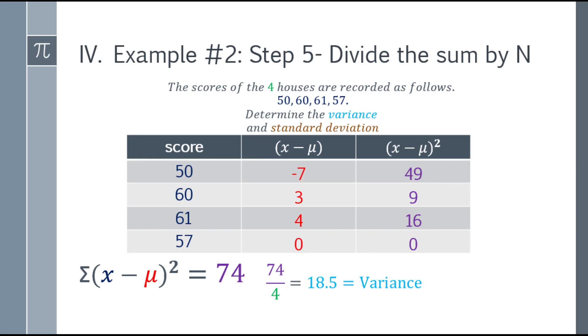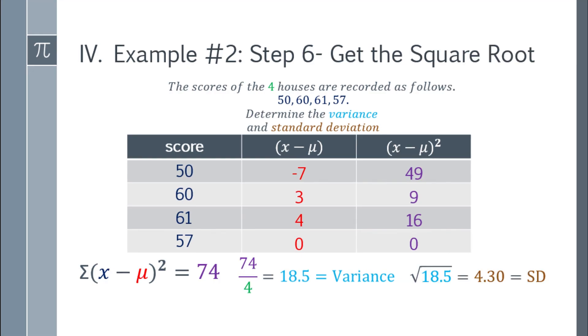Now, how do we get the standard deviation? So our standard deviation here, get the square root of 18.5, that will be around 4.30.